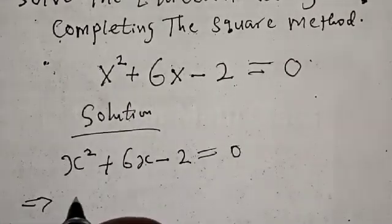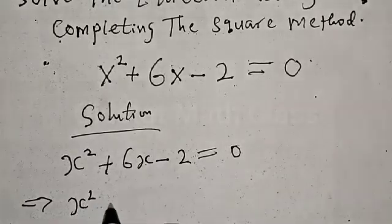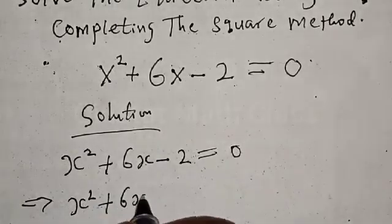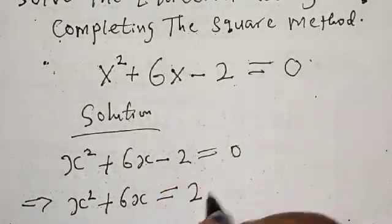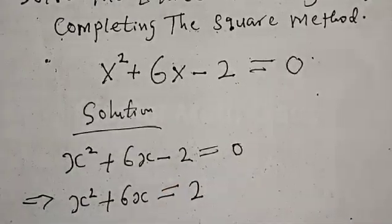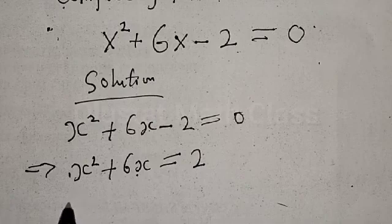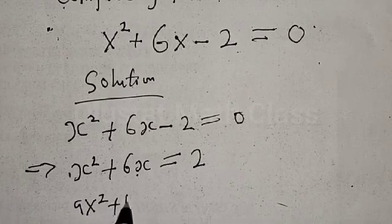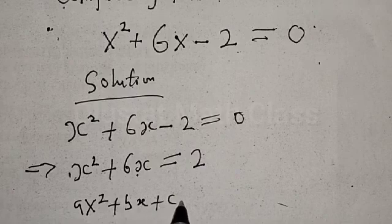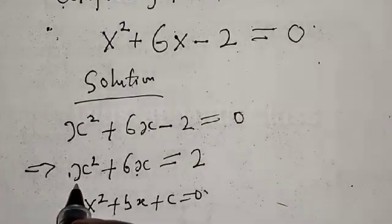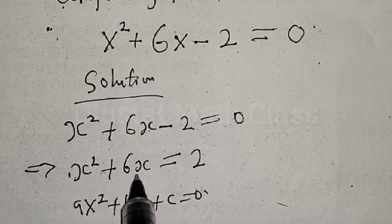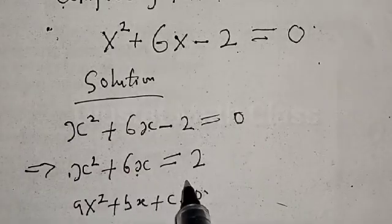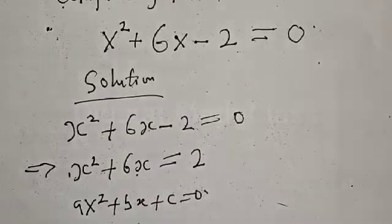This implies that we have x² + 6x = 2. That is, this minus 2 will come to the other side as plus 2. Then we know that we have the form ax² + bx + c = 0. Here the coefficient of x² is 1, the coefficient of x is 6, and the constant is 2.